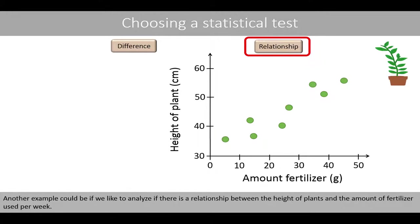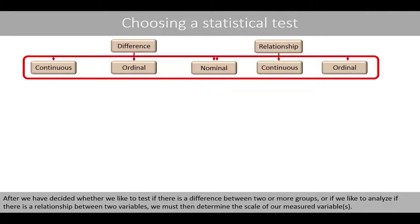Another example could be if we'd like to analyze if there is a relationship between the height of plants and the amount of fertilizer used per week. After we have decided whether we'd like to test if there is a difference between two or more groups, or if we'd like to analyze if there is a relationship between two variables, we must then determine the scale of our measured variables.